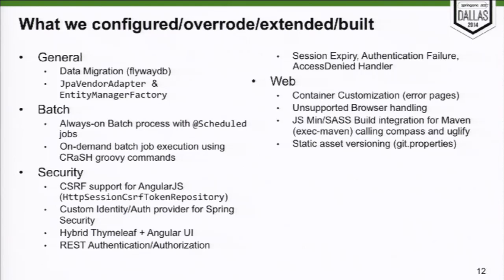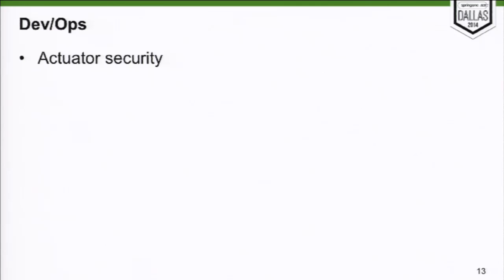On the web side, we did some minor customizations to the container. We intercept browsers that we don't support — some old IE versions don't necessarily work. Since it was an AngularJS front end, we integrated some of the JavaScript and CSS builds as part of the Maven build. Part of the Actuator functionality that gives you the Git properties — we used that to do our static asset versioning and cache busting, which was really useful.